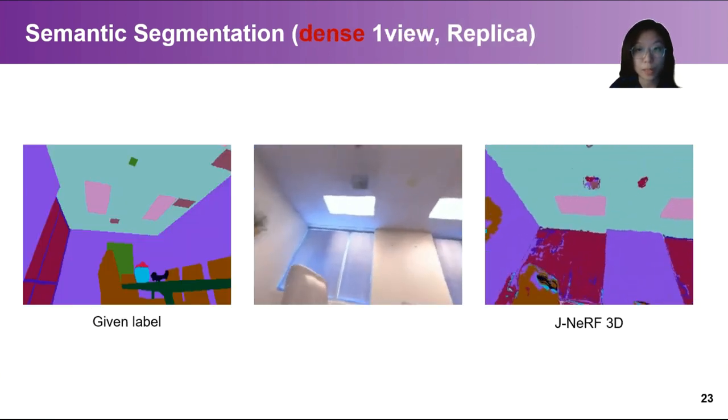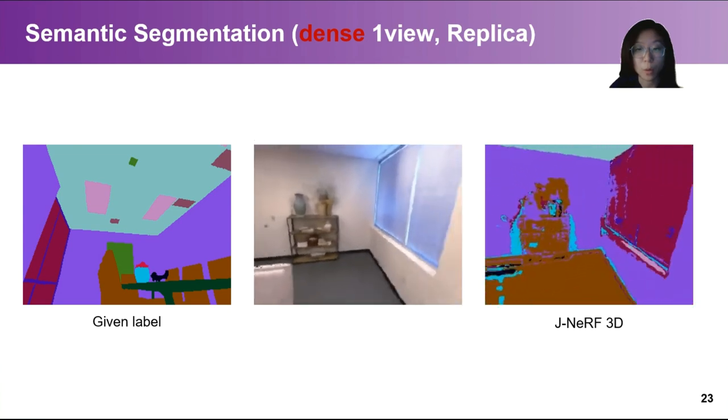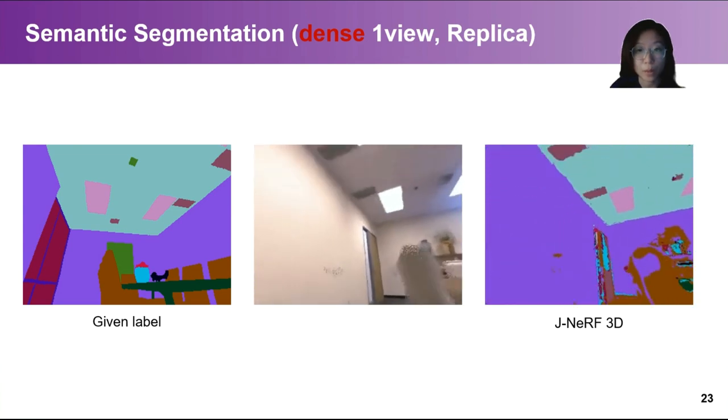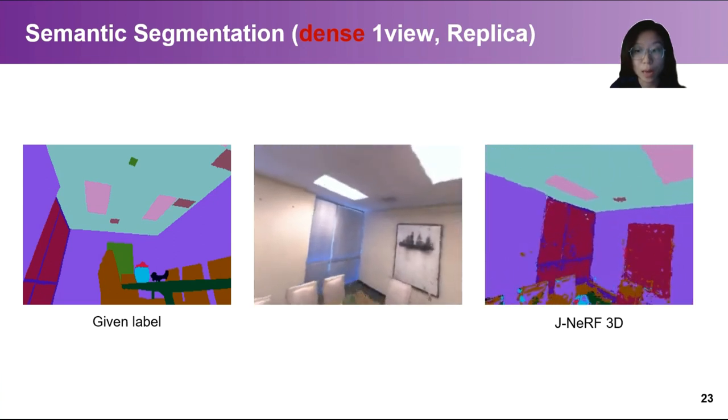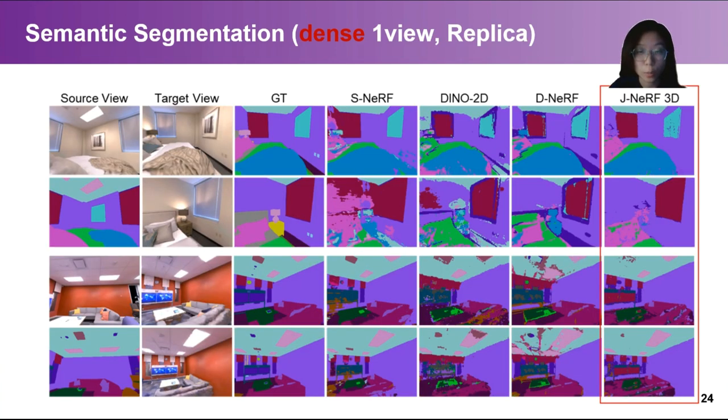Jacobi NERF can also propagate labels under the dense setting where all pixels in a single source view are annotated. This is useful when we want to obtain fine-grained labels with a higher annotation cost. Jacobi NERF can achieve comparable results on dense semantic segmentation label propagation.